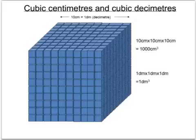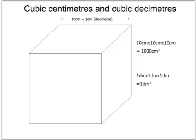1,000 cubic centimetres on this diagram is the same as 1 cubic decimetre. So you just have to remember: cubic centimetres to cubic decimetres, divide by 1,000. If you're converting cubic decimetres to cubic centimetres, you multiply by 1,000 — or 10³.